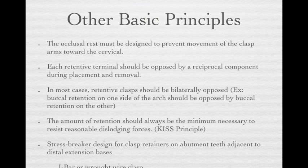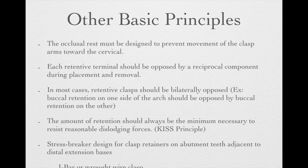In most cases, the retentive clasp should be bilaterally opposed to distribute force evenly. The amount of retention should always be the minimum necessary to resist reasonable dislodging forces — that's the KISS principle: keep it as simple as possible. If you put too much retention, you will either hurt the tooth or the patient will have difficulty removing the RPD. Also, when we have a distal extension basis, we prefer the bar-type design, which is the I-bar or the wrought wire clasp.